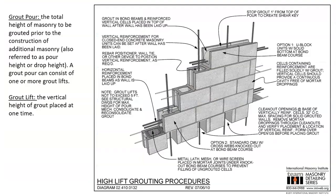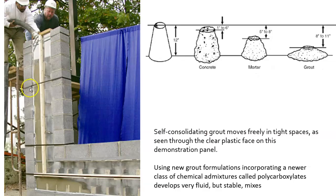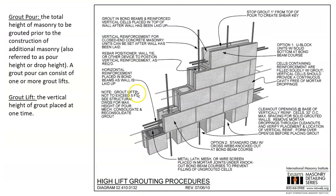A grout pour is the total height of masonry to be grouted prior to construction of additional masonry — we build a wall, stop, and grout. A grout pour can consist of one or more grout lifts, where a grout lift is the vertical height of grout placed at one time. The engineer specifies how far the grout can be dropped; we can't build very tall walls and drop it from any height.